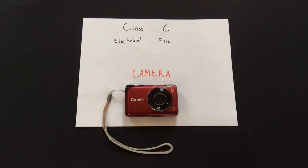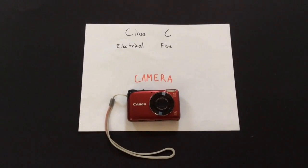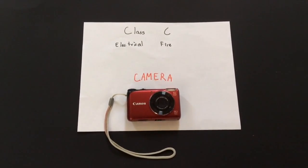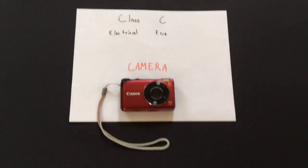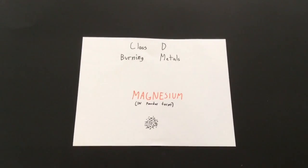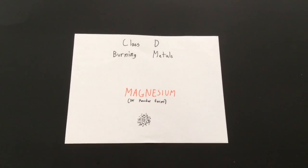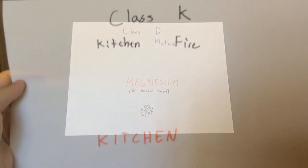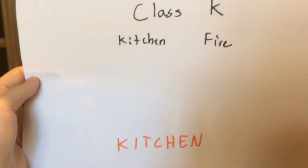The third classifier is Class C. These fires involve live electrical equipment like cameras. The next classifier is Class D. These fires involve burning metals such as magnesium and powder.